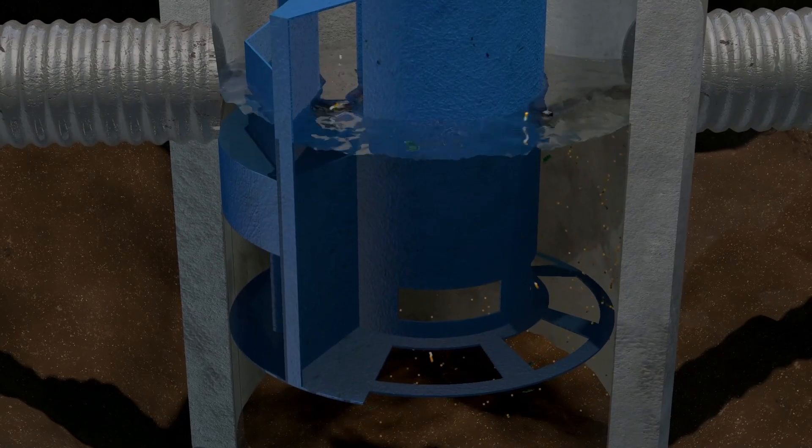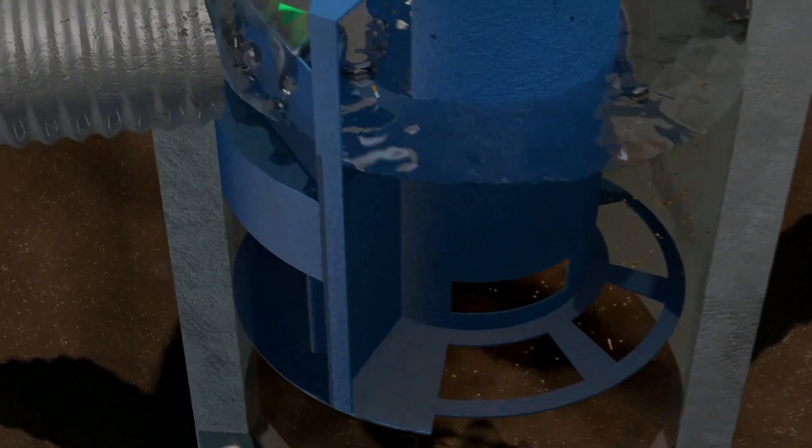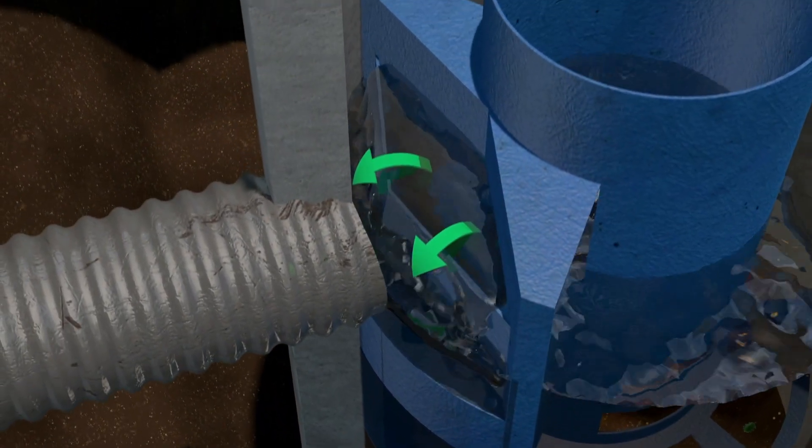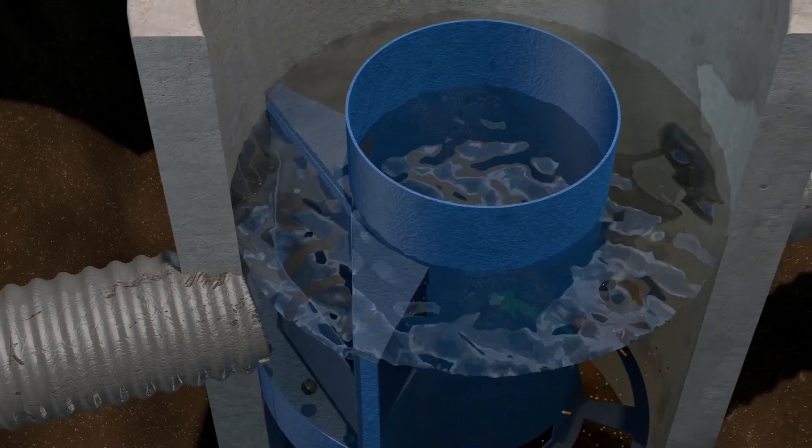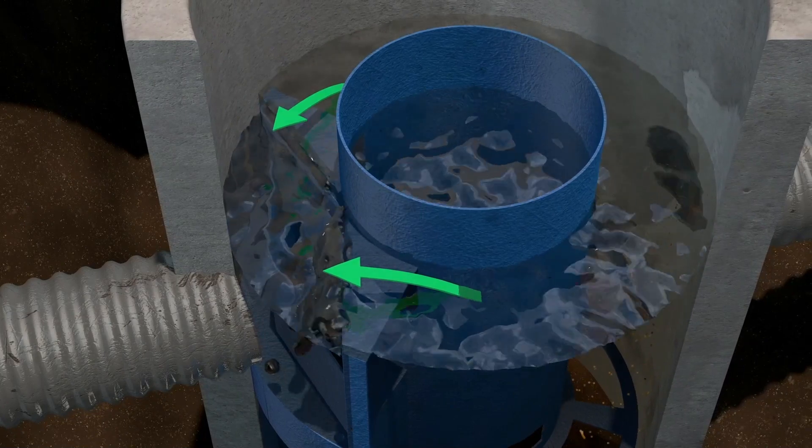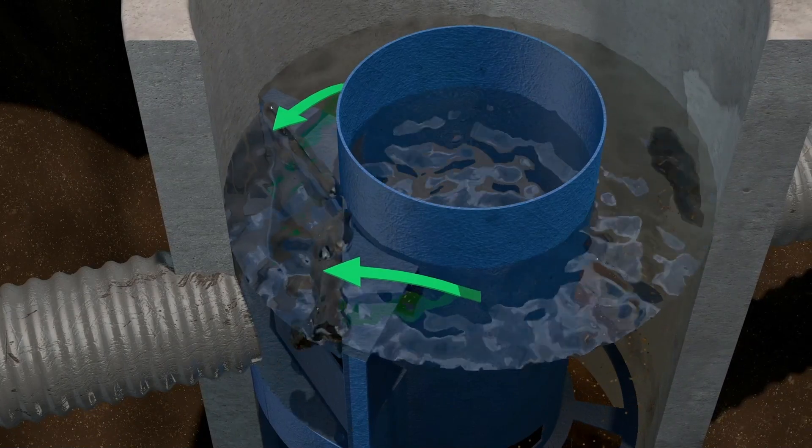Sediment settles into the sump and treated water exits through the outlet window and out of the system. When flows exceed the capacity of the flumes, the excess water flows over the flumes and exits the system without resuspending or washing out previously captured litter and sediment.